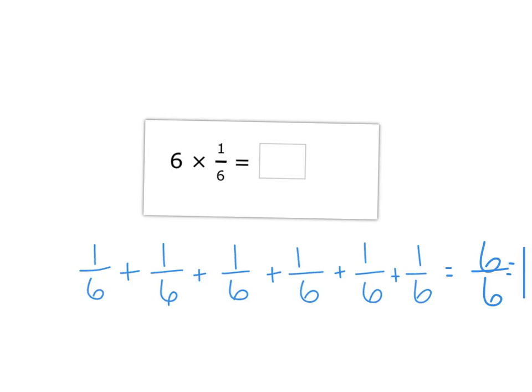So you have that repeated addition strategy, but you also have the shortcut of taking the whole number times the numerator, and leaving the denominator the same. You get the same answer, the same product, just a little bit quicker that way, and it's still equivalent to 1 whole.